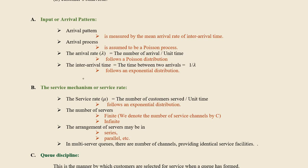It also follows the Poisson distribution. You also need to know the inter-arrival time. The inter-arrival time is the reciprocal of the corresponding arrival rate, that is 1 divided by lambda. The arrival rate is denoted by the notation lambda.